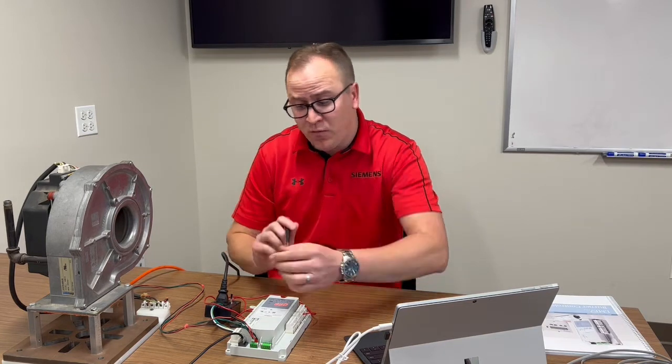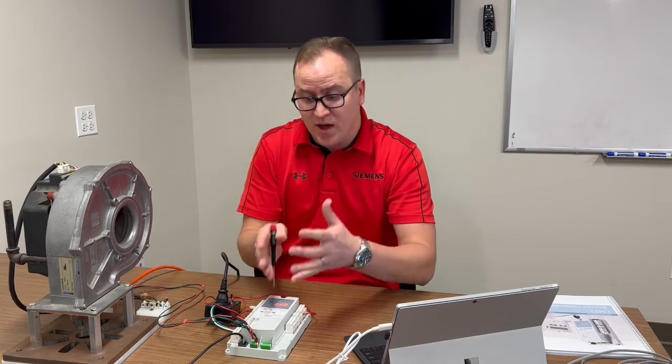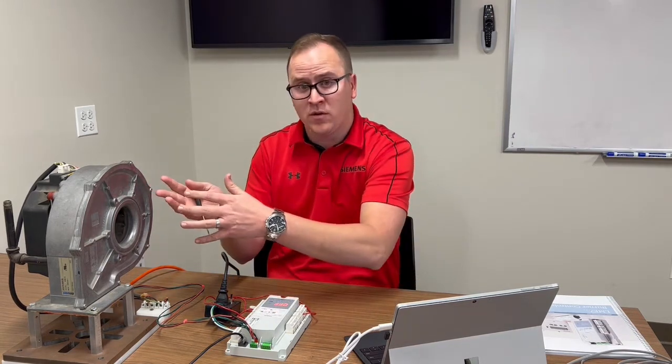And these four wires are: there's a 24 volt DC signal, there's that PWM signal going out, that tachometer signal coming back, and a ground wire, all with these four wires.